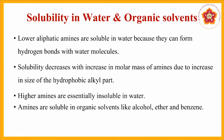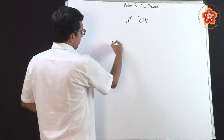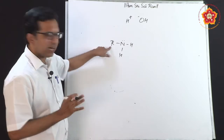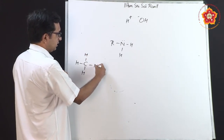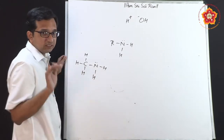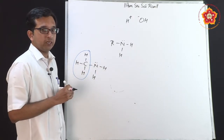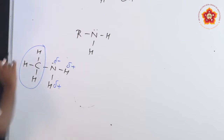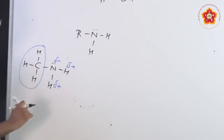Looking at solubilities — water is a polar solvent, which means water can split as H⁺ and OH⁻. With a primary amine such as CH3NH2 (methanamine), carbon and hydrogen have almost the same electronegativity, but the nitrogen end is electronegative and the hydrogen end is electropositive. This difference allows participation in hydrogen bonding.